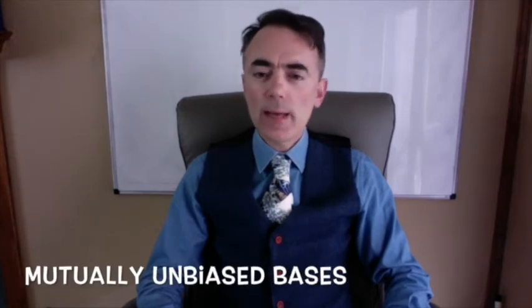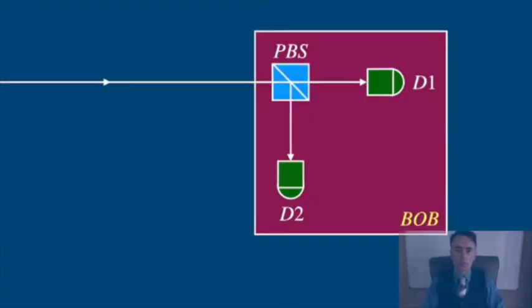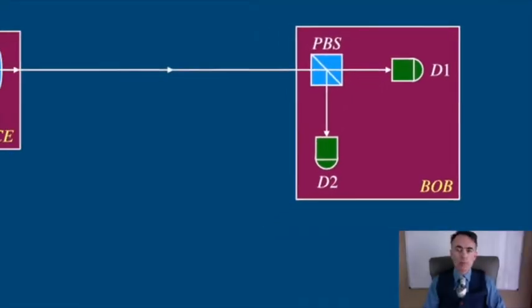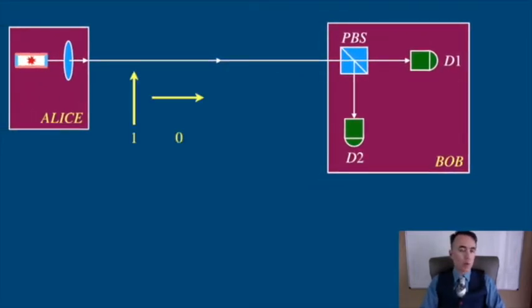The key point of these protocols is the mutually unbiased basis. What does this mean? Well, it means that you need two bases to encode information that are orthogonal. Let me put this clear going to the actual polarization of photons. We mentioned in the previous lesson that we can encode 1s and 0s in photons polarized vertically and horizontally. We could also do this in photons polarized diagonally 45 degrees and anti-diagonally minus 45 degrees.